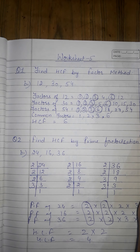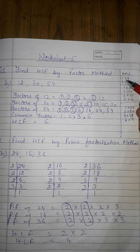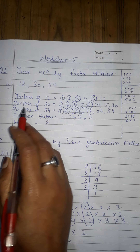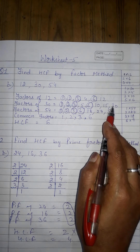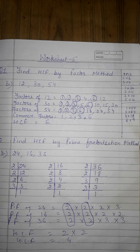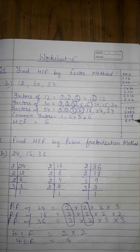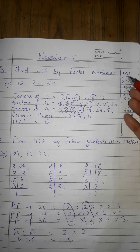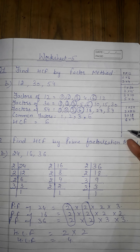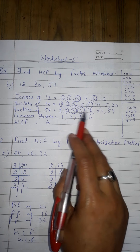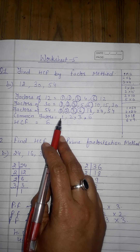I have written the factors of 12, then the factors of 30, then the factors of 54 in rough. You must find all factors carefully using the proper process, otherwise some factor might get skipped and the answer would be wrong. If we follow the systematic approach, no factor will be missed.